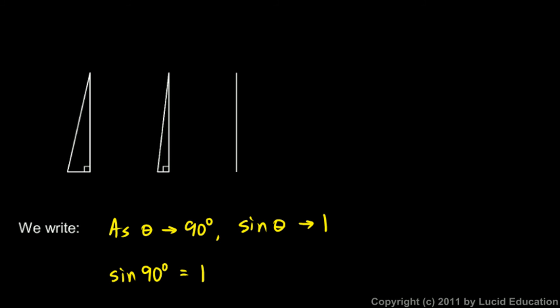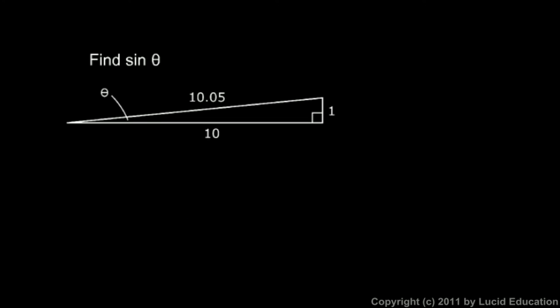You should know those facts: the sine of 0 degrees is equal to 0, and the sine of 90 degrees is equal to 1. But you shouldn't simply memorize them — you should understand why they are true. Hopefully these little diagrams and your understanding of the fact that sine is opposite over hypotenuse will help you see why that is the case. Now some quick examples demonstrating this: we're looking at angle theta, which is this tiny little angle, and we're told to find the sine of theta.